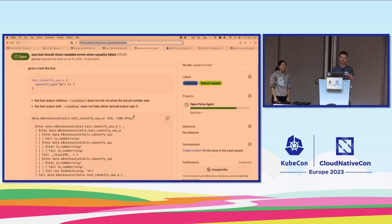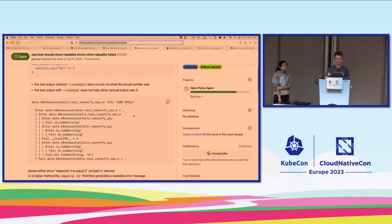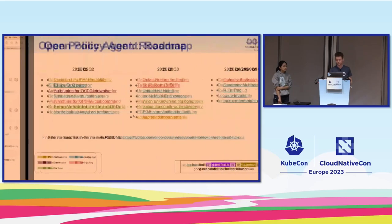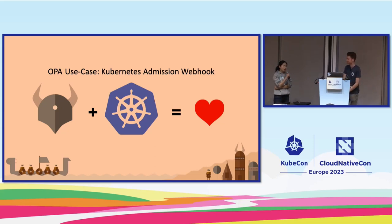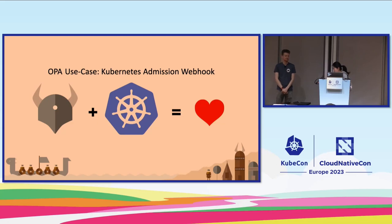Anybody who has used OPA test may be familiar with the slightly challenging output you get from running it. The idea is that we're going to provide a more user-friendly way of presenting the output from tests and showing exactly what went wrong. That's all I had on the core OPA project — now I'm going to hand over to Rita, who's going to talk about how you use this in Kubernetes and what the latest news is on Gatekeeper.